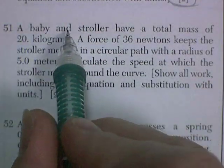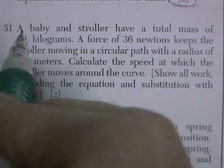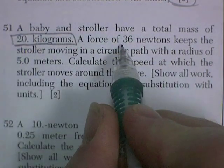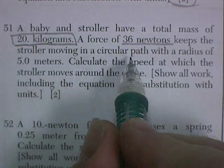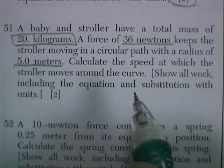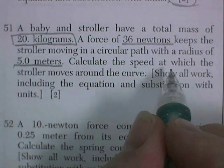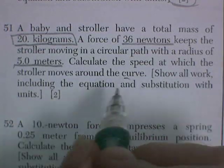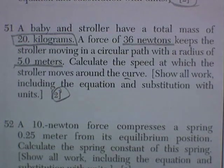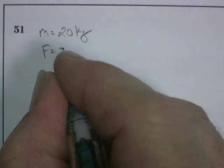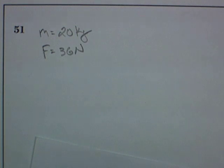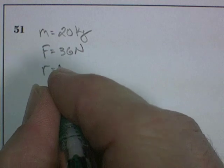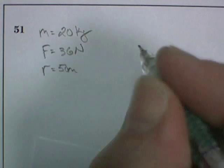Question 51. A baby in a stroller, how cute, have a total mass of 20 kilograms. A force of 36 newtons keeps the stroller moving in a circular path with a radius of 5 meters. Calculate the speed at which the stroller moves around the curve. Show all work, including the equation substitution with units. So we've got a mass equal to 20 kilograms, a force of 36 newtons, and it's in a radius of 5.0 meters.